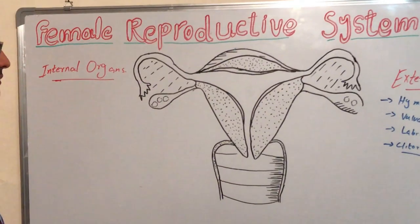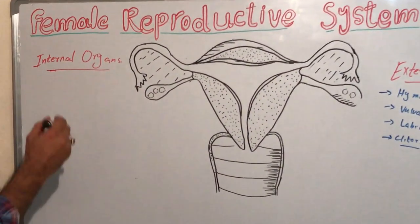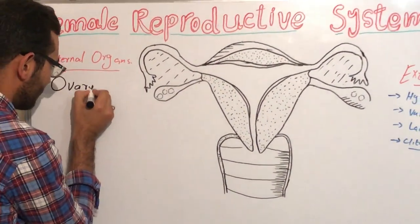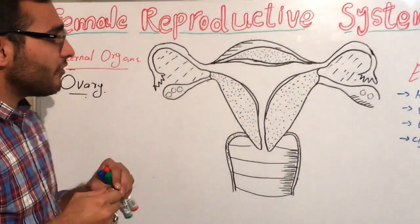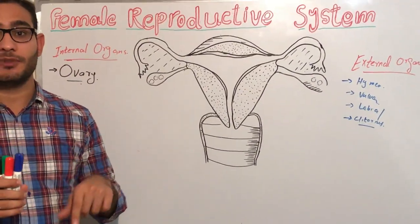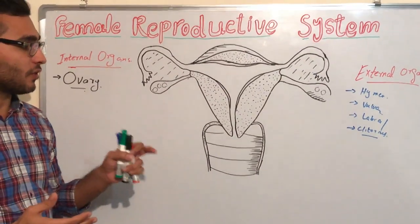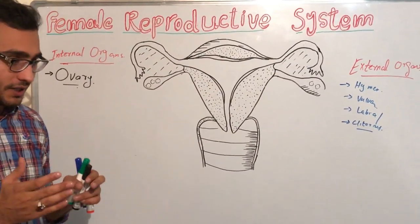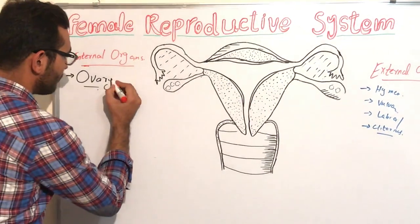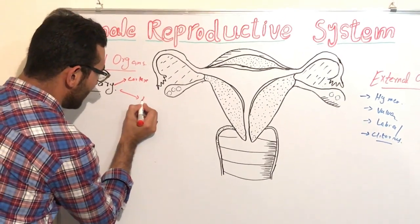Now we will discuss the internal organs of the female reproductive system. First we will discuss the ovary. The ovary is made up of simple cuboidal epithelial tissue, also called germinal epithelial tissue. The ovary is made up of two layers: the outer layer is called the cortex and the inner one is called the medulla.